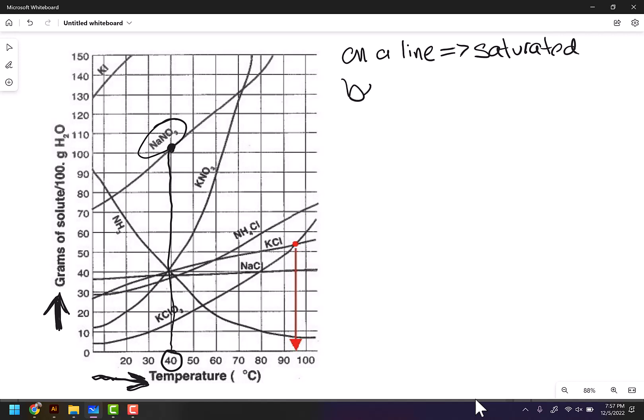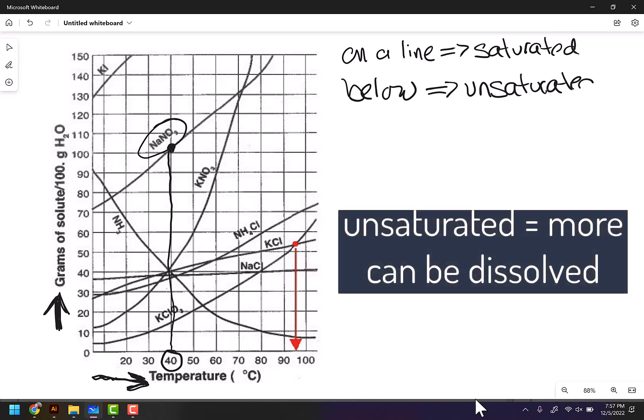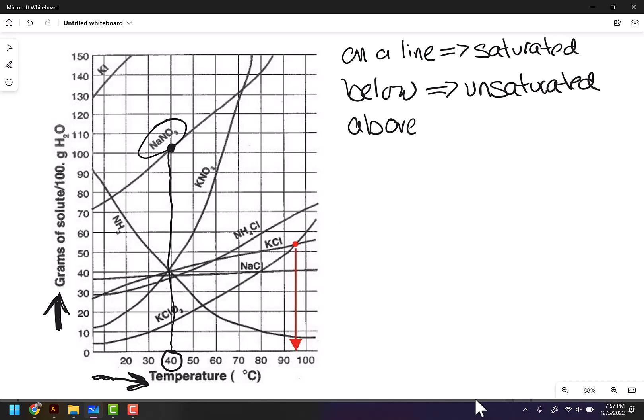If you are below the line, then you are unsaturated, and unsaturated means that more can still be dissolved. If you are above the line, then you are supersaturated, and supersaturated is a very specific situation.